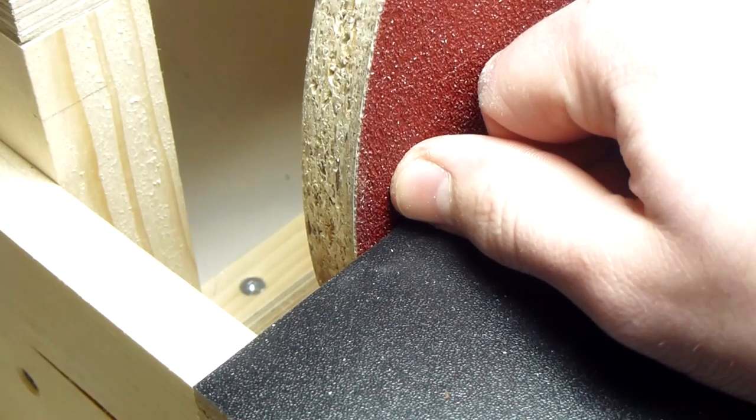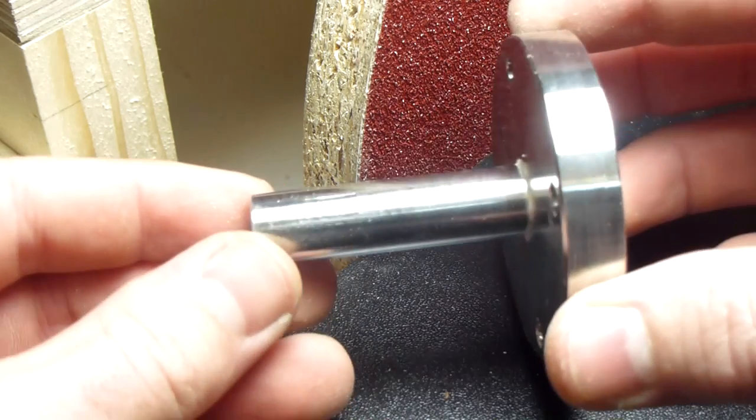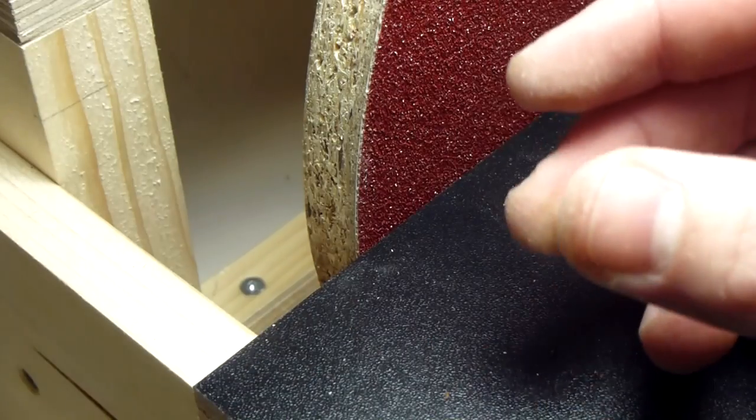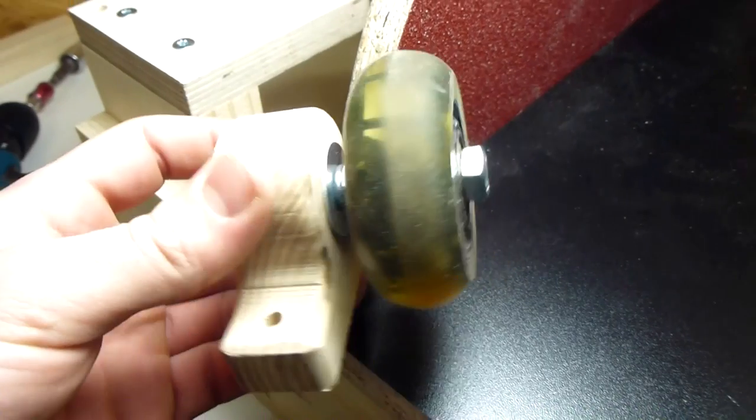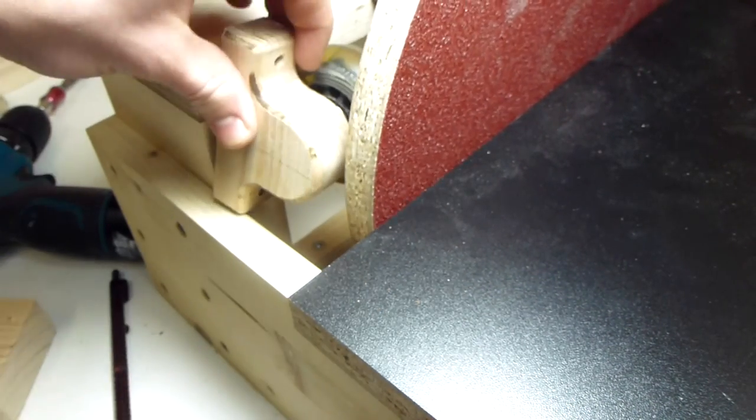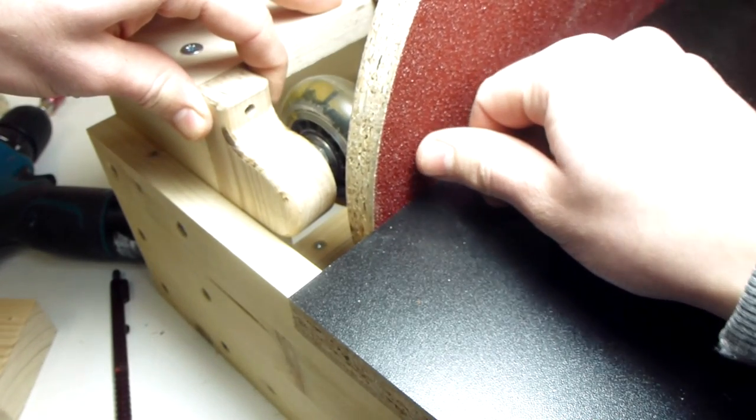So I could use the disc sander now as it is but the disc has a little bit of deflection. And I knew that I would run into this problem because the shaft of my flanges aren't really long enough. So what I want to do to fix this problem is to mount this roller blade wheel behind the disc, and this should prevent the disc from deflecting.